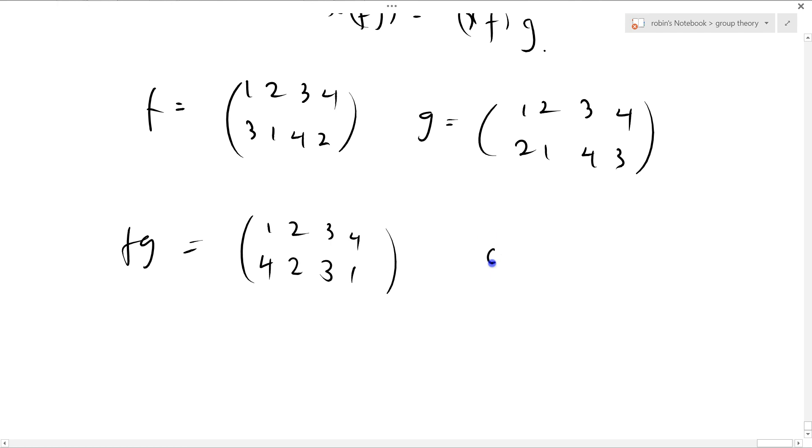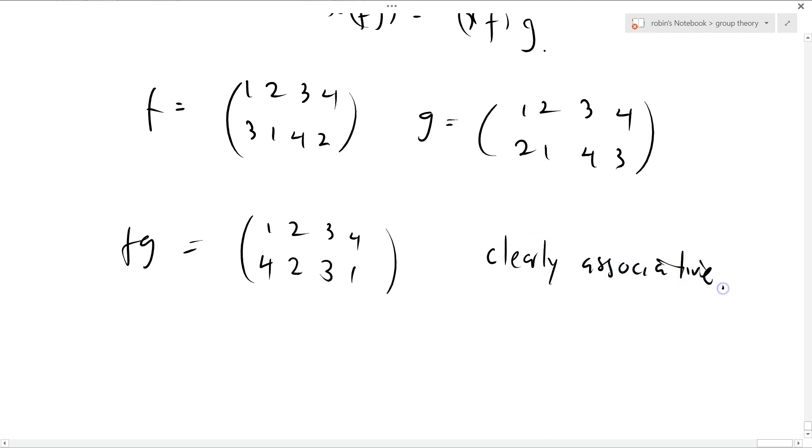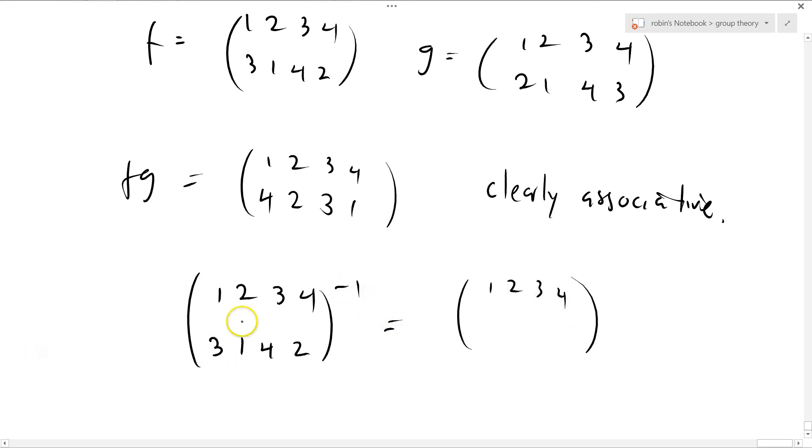It's clearly associative. What about inverses? Well, let's work out the inverse for 1, 2, 3, 4; 3, 1, 4, 2. Equals, that's f^{-1}, I guess. 1, 2, 3, 4. Well, we'll just read upwards. 1 came from 2, 2 came from 4, 3 came from 1, and 4 came from 3.